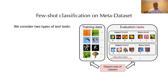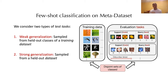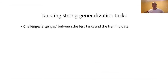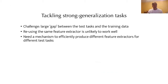Within Meta-Dataset there are two types of test tasks. Weak generalization is when we're sampling held-out classes from one of the eight training datasets — we train on birds or Omniglot and evaluate on other unseen classes from the same datasets used during training. Stronger generalization is sampling from a held-out dataset — training on eight datasets and having test classes drawn from a brand new dataset. That's so-called strong generalization and it's very challenging. When there's a large gap between the test tasks and training data, just using the same feature extractor isn't going to work very well.